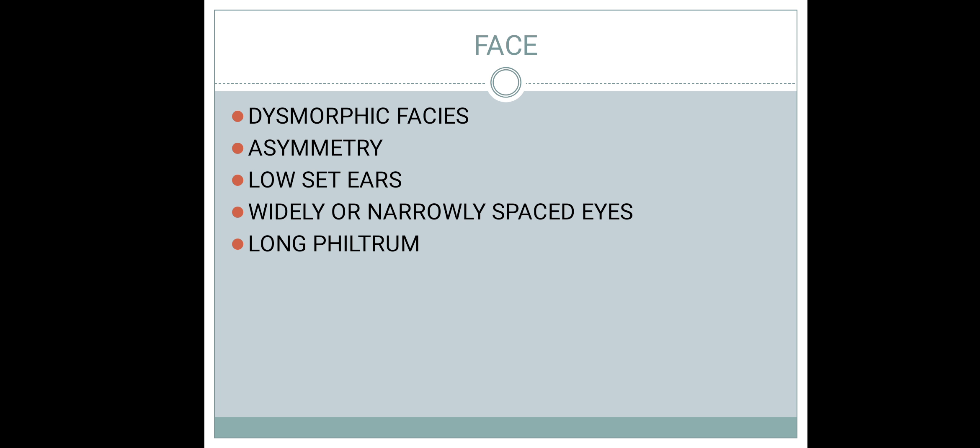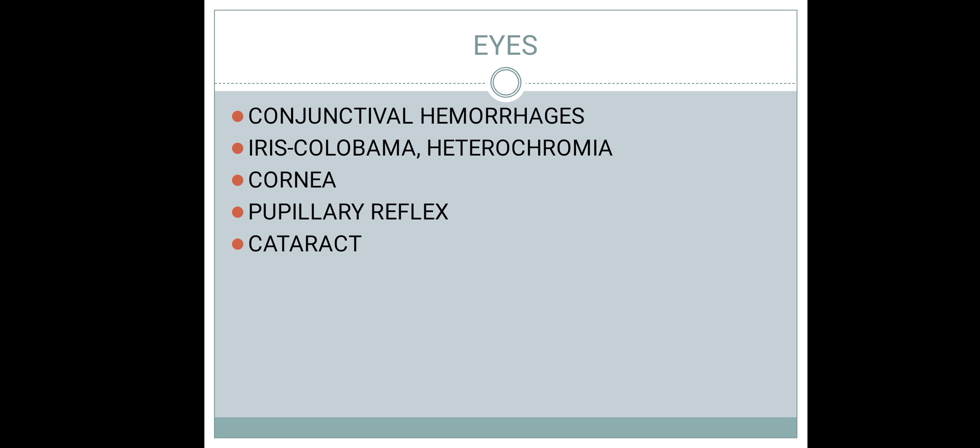Examine the face carefully, as dysmorphic features can give a clue for congenital anomalies. Look for facial asymmetry, low-set ears, and widely or narrowly spaced eyes by measuring the interpupillary distance. Examine the lips and philtrum — the area above the lips. A long philtrum is associated with some congenital anomalies.